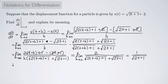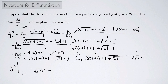Now, ds/dt evaluated at t equals 2: I plug 2 into the expression, giving 1 over the square root of 2 times 2 plus 1, which is 1 over the square root of 5. And if you remember, ds/dt gives the velocity function, so this is telling us the velocity of the particle at time t equals 2.